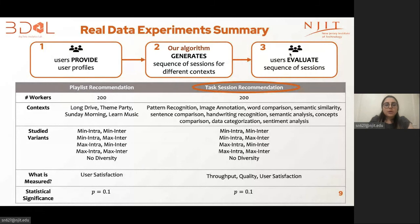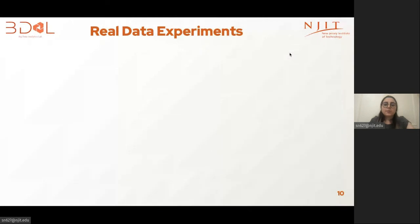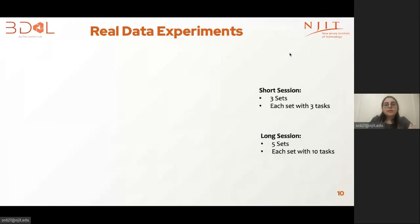We consider the four variants of the bi-objective problems — minimization and maximization of the intra and inter versions and their combination — and compare them with a no-diversity baseline. We also consider a set of contexts, where a context is a set of themes we attempt to capture through these experiments. The goal of the real data experiments is to see how users are satisfied with different variants of the problem formulation compared to the baseline under different contexts. In the task recommendation experiments, workers are shown two variants: one that is short sessions, containing three sets with three tasks in each set.